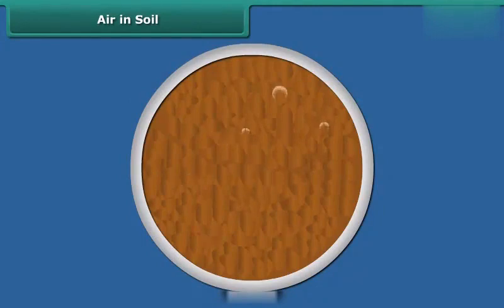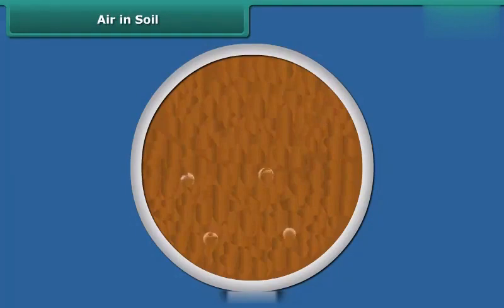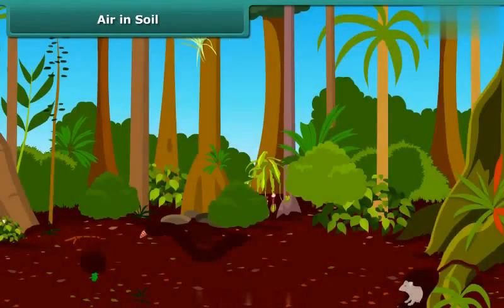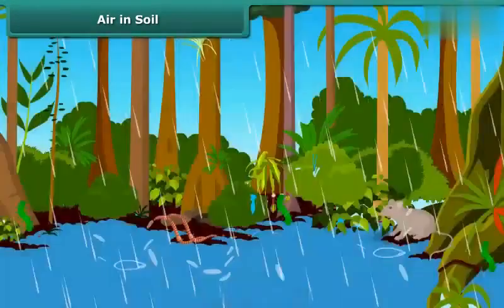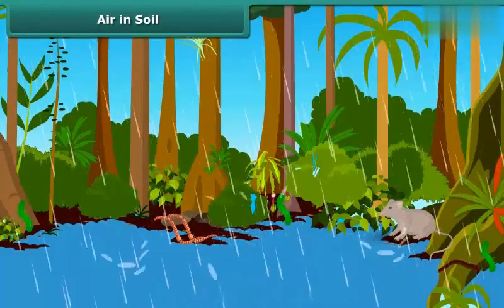When water is added to the soil, it replaces the air present in the soil, and the air comes out as bubbles. The organisms living in burrows and holes of the soil use this trapped air to breathe.